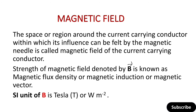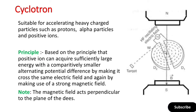If we compare the magnetic field and electric field: the electric field has its source in electric charge and is a scalar quantity, whereas the magnetic field is produced by a current-carrying conductor and is a vector quantity. We denote the magnetic field by vector B, which is called magnetic flux density, magnetic induction, or magnetic vector. Its unit is Tesla or Weber per meter square.